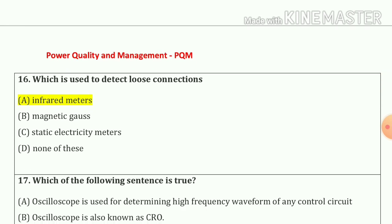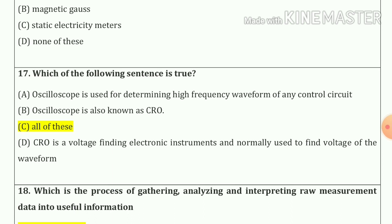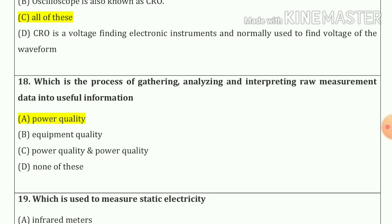Question number sixteen: which is used to detect loose connections? The answer is infrared meters. Question number seventeen: which of the following sentences is true? The answer is all of these; all these sentences are true. Question number eighteen: which is the process of gathering, analyzing, and interpreting raw measurement data into useful information? The answer is power quality.